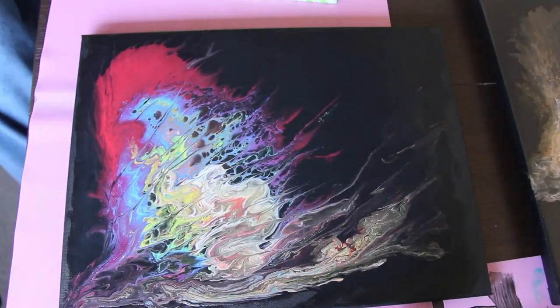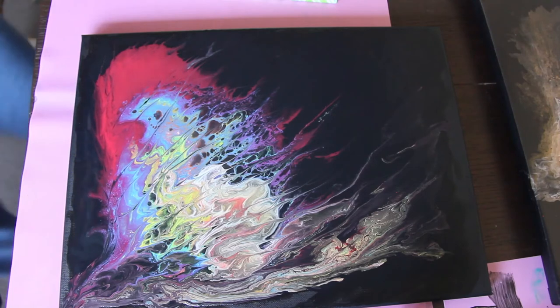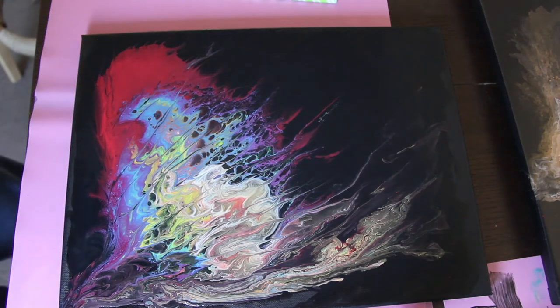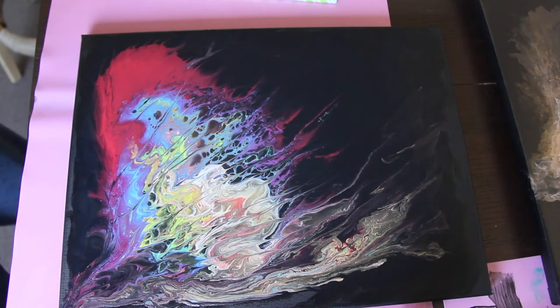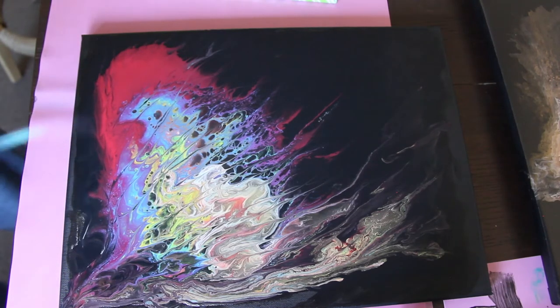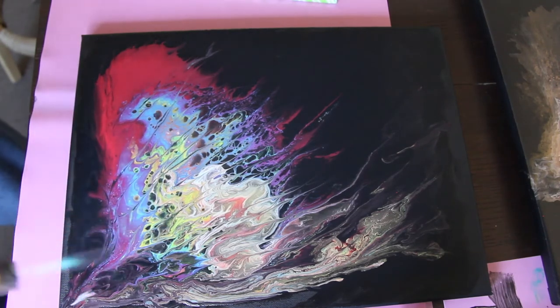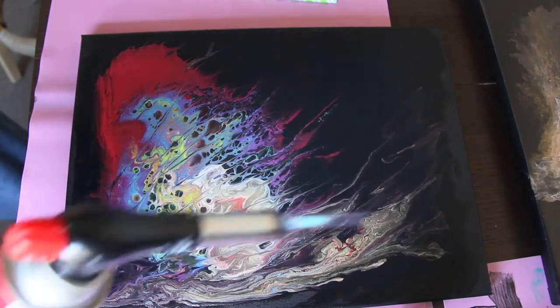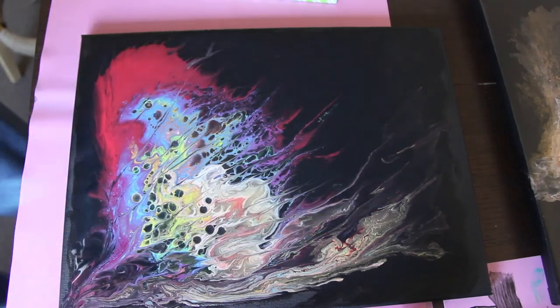So I've done the modification using the toothpick and I'm done with that. And I'm going to use the blow torch to pop some bubbles on the paint. As you can see the heat of the blow torch can create some cells in the paint which is nice.